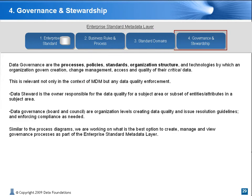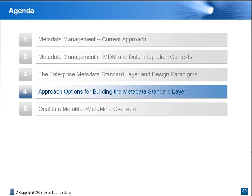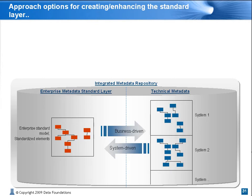A 10,000-foot view of the standard layer with the rules, processes, relationships — well, we're certainly still working on some of those aspects. We have talked so far about the need for a standard layer and what composes that standard layer. Let's continue now to some approach options for building it. There are two fundamental approaches that can be adopted for a small data mart project to a large-scale ERP implementation to a pre-MDM implementation phase. The key is to retain the analysis, and the standard is the residue that automatically builds as part of the process.